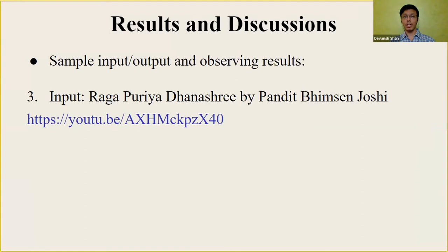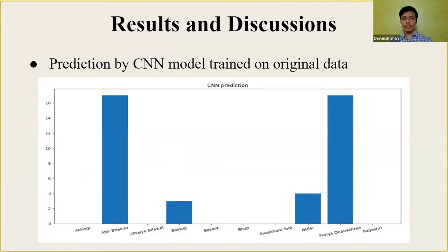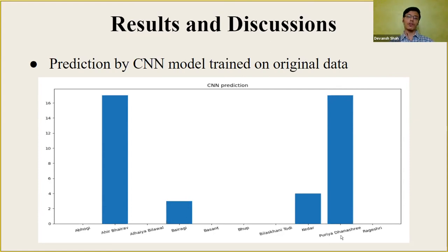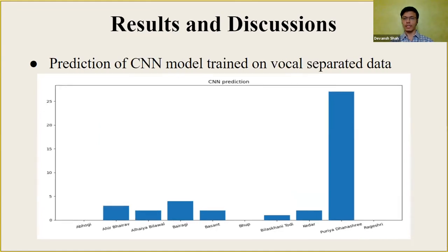The final sample input-output is of Raghpurya Dhanashri by Pandit Bhimsen Joshi. This is a special case showing the effect of audio source separation. The CNN model trained without audio source separation is mainly confused between two classes, one of which is the real class. But when the same audio is passed into a model trained on audio source-separated data, the output is much cleaner — the source separation filters out noise, giving the model better clarity in deciding which Raga it is.